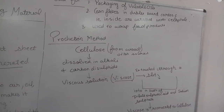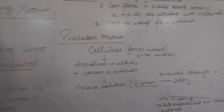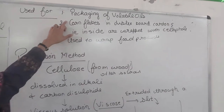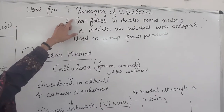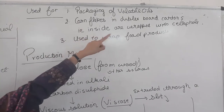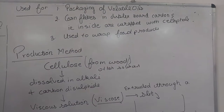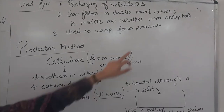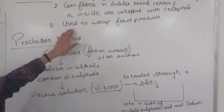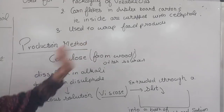The uses of cellophane for packaging: they are used for packaging of volatile oils. Corn flakes which are packed in duplex board cartons — the inside of the carton is having cellophane. Thereafter it is used to wrap food products like bread and biscuits.